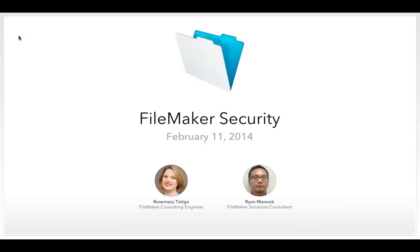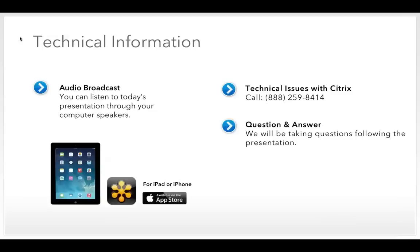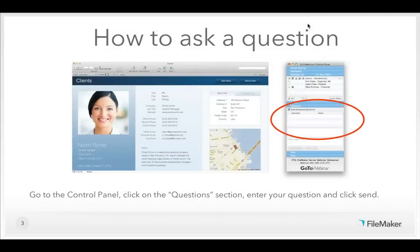Before we get started, let's cover a few brief housekeeping notes. For the best experience, it is strongly recommended that you participate in this web seminar with at least a broadband connection. If you have any problems or require online assistance at any time, please contact Citrix Technical Support at 888-259-8414. Throughout today's presentation, you will have the opportunity to type in and ask questions. Go to the control panel, click on the question section, enter your question, and click send. We'll try to cover as many questions as time allows at the end.